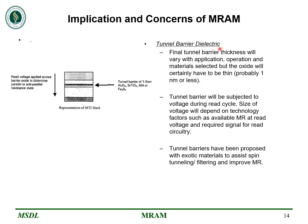Now let's talk about implications and concerns of MRAM. The first is the tunnel barrier dielectric. The tunnel barrier, formed by a dielectric, maintains the certain distance required for magnetization. However, the tunnel barrier is subjected to voltage during heat cycles. The voltage will depend on technology factors, and there will be a difference in voltage for read and write operations. Since different dielectric materials have different properties, this creates a problem of different materials behaving at different temperatures.